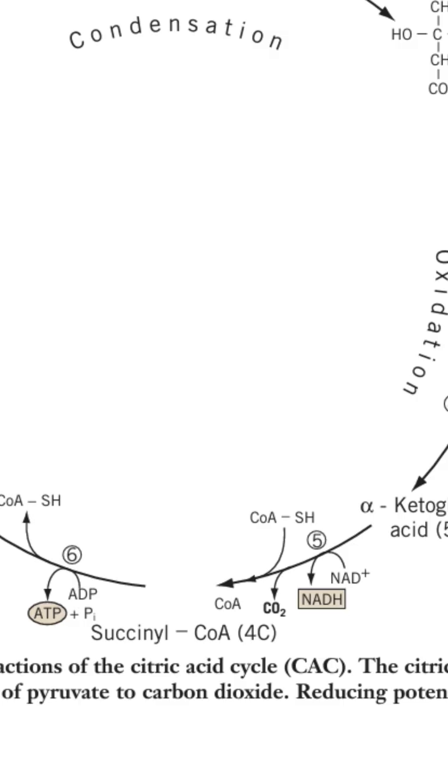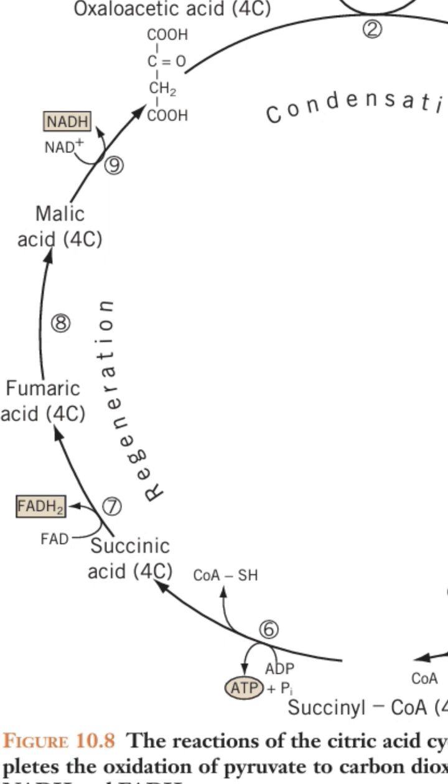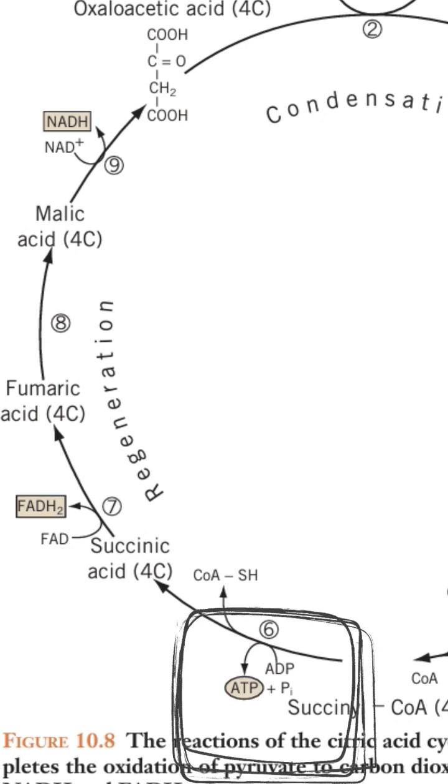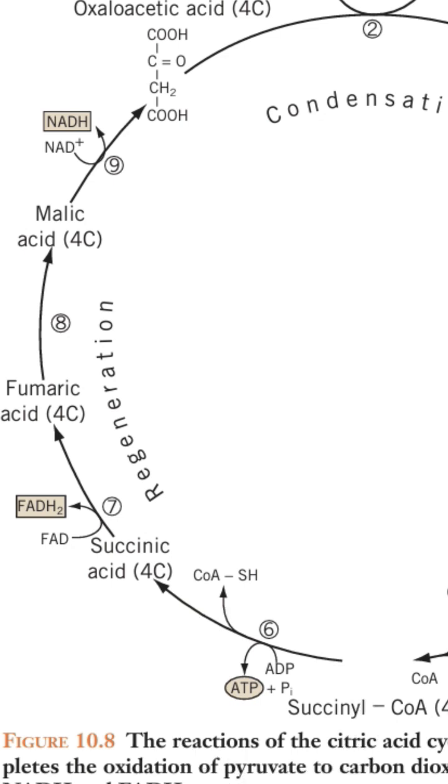Step 5: GTP production. In the fifth step, succinyl coenzyme A is converted to succinate in the presence of succinyl coenzyme A synthetase enzyme, which forms a molecule of GTP through the process of GDP phosphorylation.